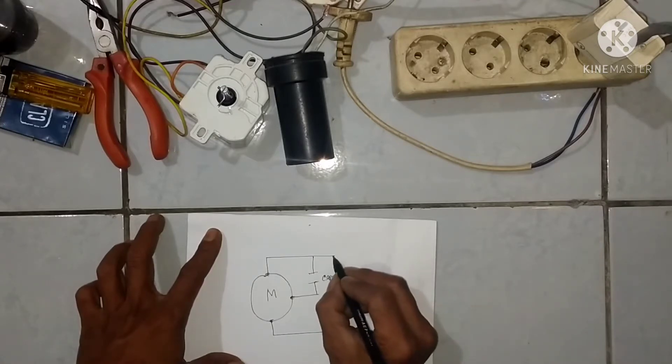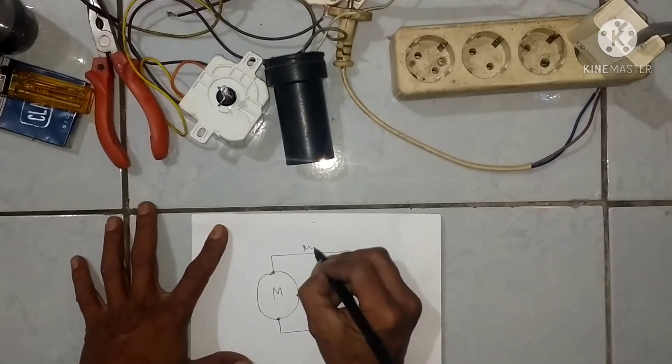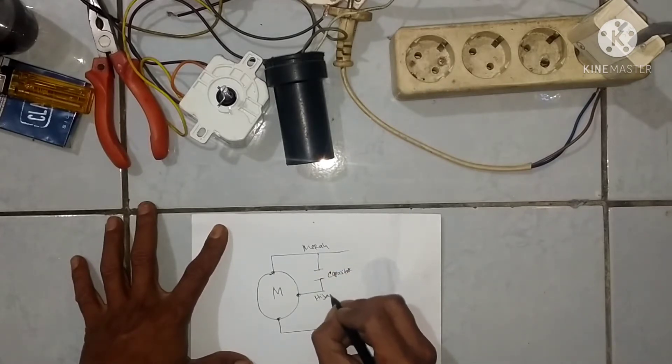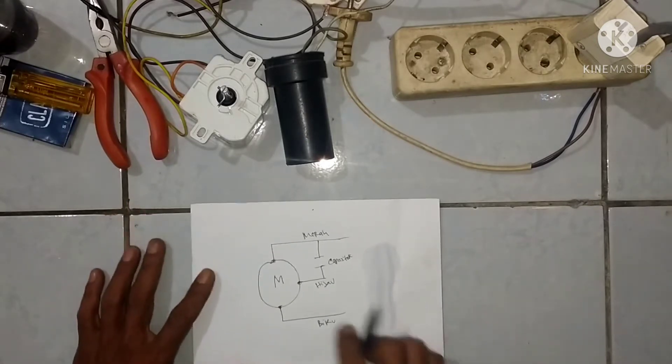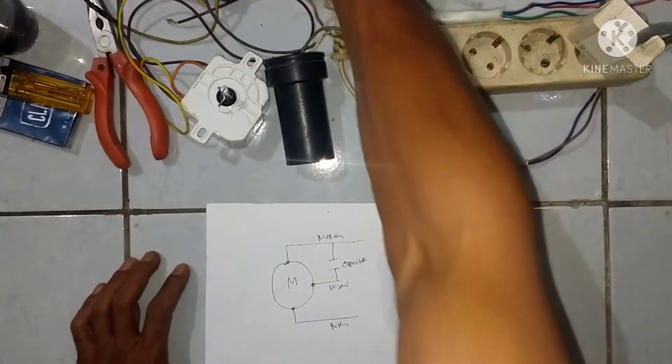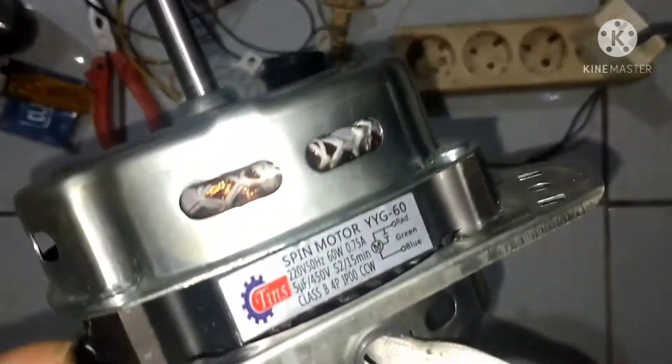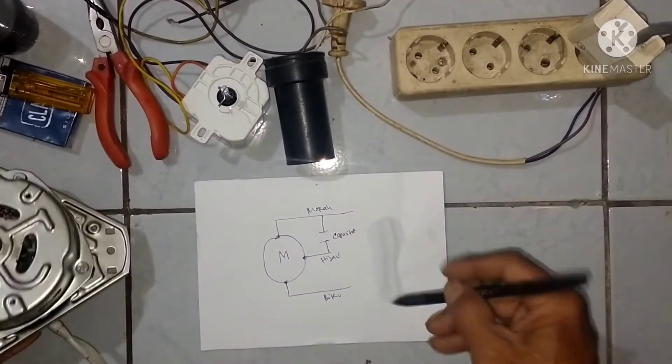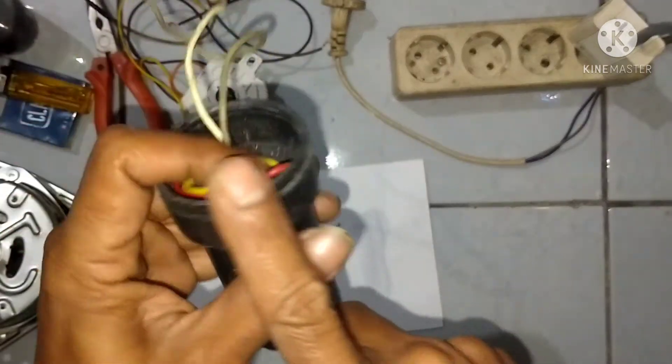Ini dua-dua ya, ini masuk power. Di sana tertuliskan red, berhubung kita orang Indonesia kita ganti warna merah, hijau, dan biru. Kita lihat ada red, green, dan blue. Red merah, hijau, dan biru. Ini kapasitor teman-teman, yang saya pakai kan hanya kapasitor pengeringnya.